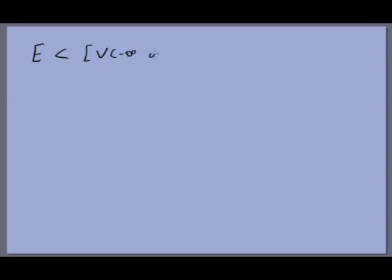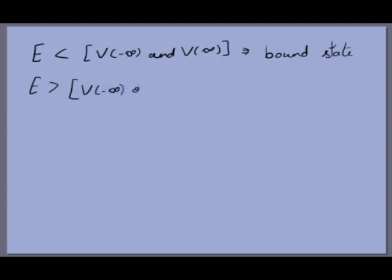For quantum mechanics, the definition is slightly different. Because we can borrow finite amounts of energy from space, what matters is the potential at infinity. If the energy of the particle is less than V(−∞) and V(+∞), then it is a bound state — it stays bound between two points and will never reach infinity because that would require absorbing a very large amount of energy. Infinity is the important point; in classical mechanics it was just two turning points because tunneling was impossible.